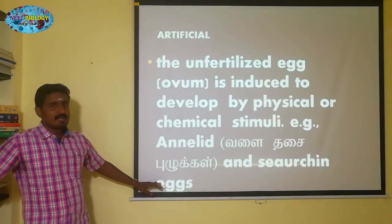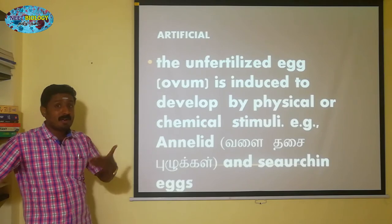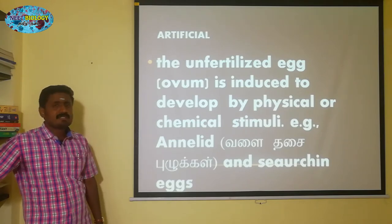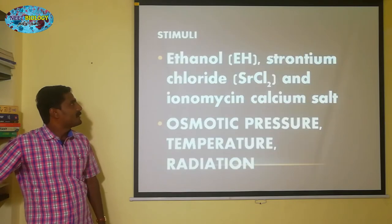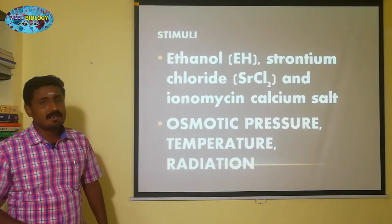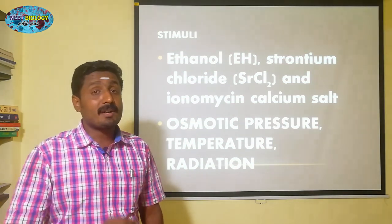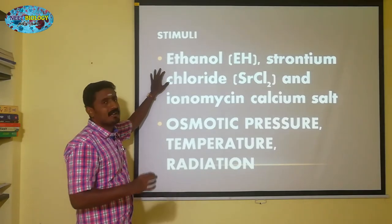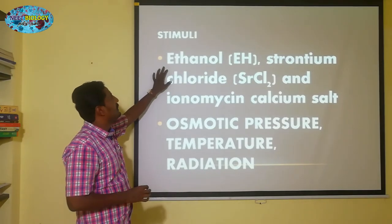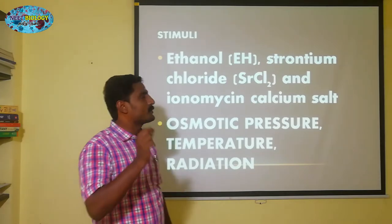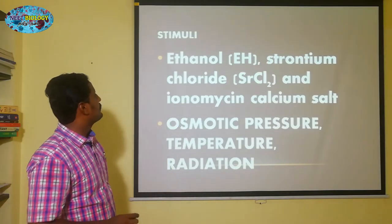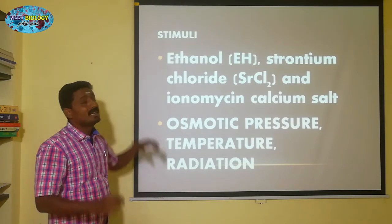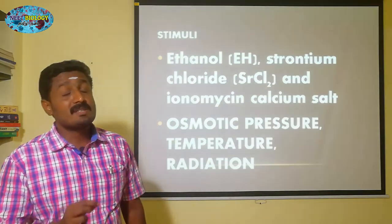In artificial parthenogenesis, you can induce parthenogenesis using chemicals. The chemicals used for parthenogenesis induction include ethanol, strontium chloride, ionomycin, and calcium salt. These are the chemicals which are used for the parthenogenesis induction.